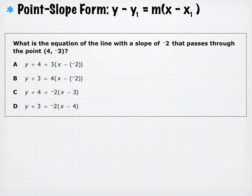Point-slope form is Y minus y₁ equals M times (X minus x₁), where M is the slope and (x₁, y₁) is a point on the line. For the equation of a line with slope negative 2 through the point (4, negative 3): eliminate A and B — they don't have slope negative 2. Answer D is correct; C incorrectly swaps the X and Y values.